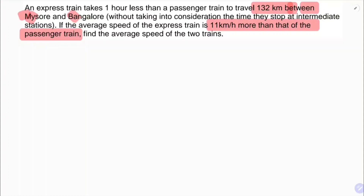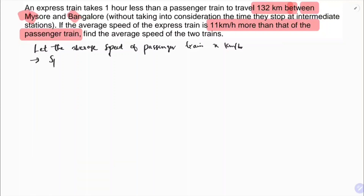Let the average speed of the passenger train be x kilometers per hour. Then the speed of the express train will be 11 kilometers more than that of the passenger train, so the express train speed will be x plus 11 kilometers per hour.